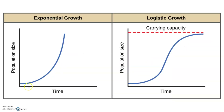As long as conditions are fantastic, a population will continue to grow at an exponential growth rate. But once those environmental pressures start to appear and you have competition for resources, that's when we see the population hit its carrying capacity. Instead of growing further, it will dwindle off and then stay right at or below that level.